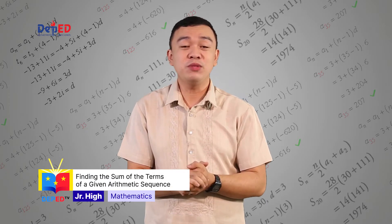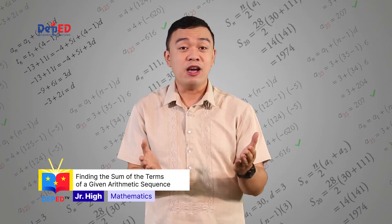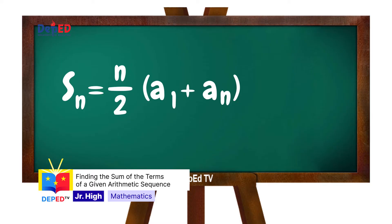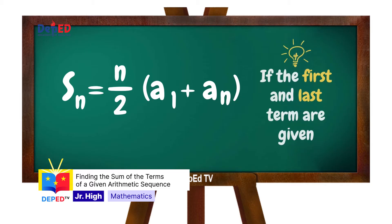In getting the sum of the terms of an arithmetic sequence, we will be using any of the following formulas. If the first and last term are given, we will use the formula S sub n is equal to n divided by 2 times (a sub 1 plus a sub n). Where S sub n is the sum of the first n terms, n corresponds to the nth position, and a sub 1 is the first term of the sequence and a sub n is the last term.